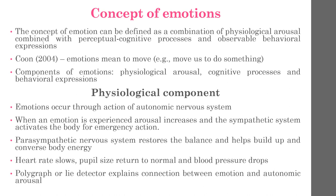Physiological arousal associated with emotions occurs through the action of the autonomic nervous system, which regulates the activity of glands, smooth muscle, and blood vessels. When an emotion is experienced, arousal increases and the sympathetic system activates the body for emergency action — for example, fighting to protect the person or fleeing from danger.